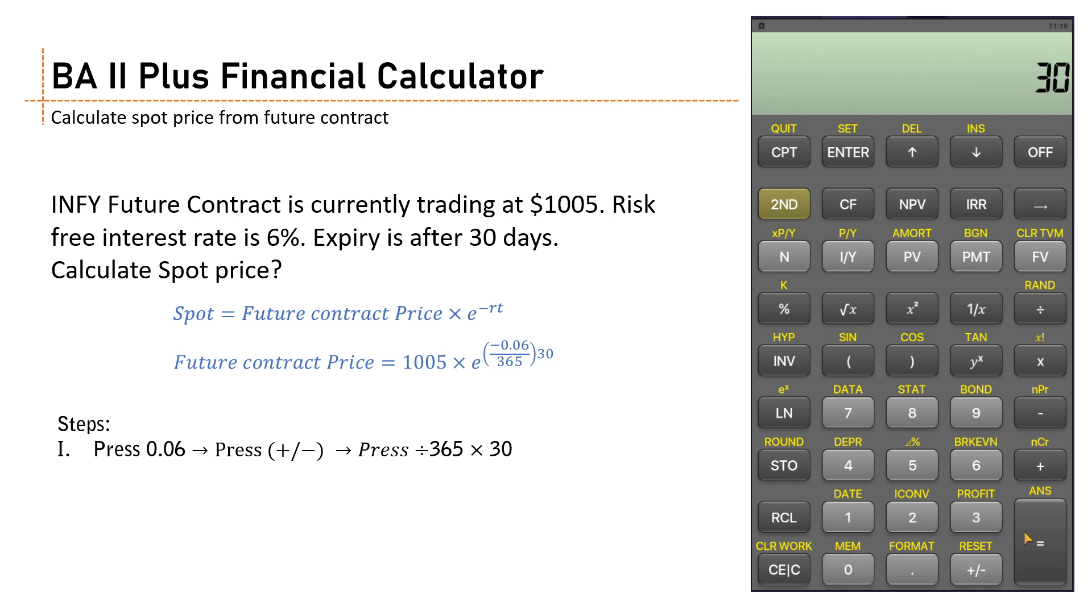You get the 30 days interest. Now press the second key here - you can see here second is written right now - and press the LN key here. So this gives you the continuous rate.